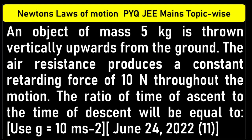An object of mass 5 kg is thrown vertically upwards from the ground. The air resistance produces a constant retarding force of 10 N throughout the motion. The ratio of time of ascent to the time of descent will be equal to?